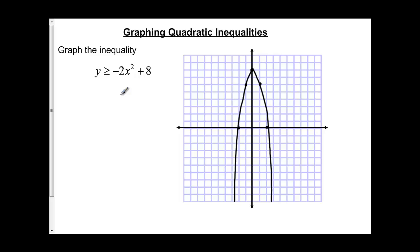Now I need to decide which side of my parabola I'm going to shade. So I'm going to pick my test point, 0, 0. I'm going to substitute it in. So I've got 0 is greater than or equal to negative 2 times 0 squared plus 8,